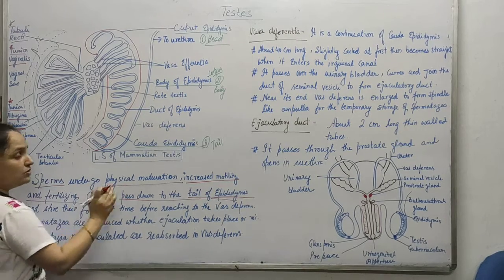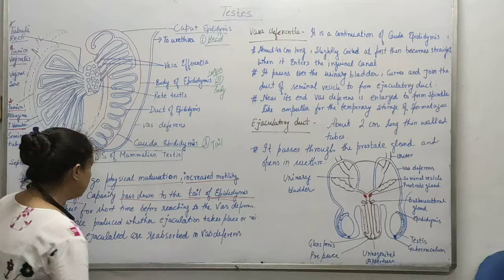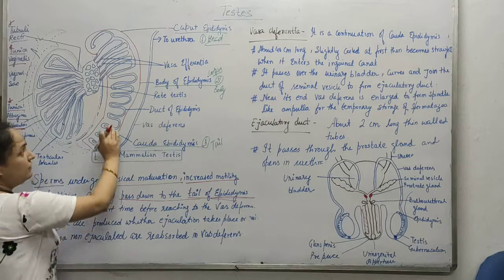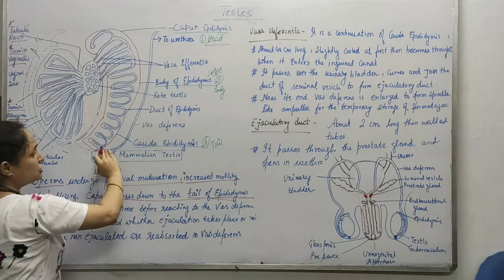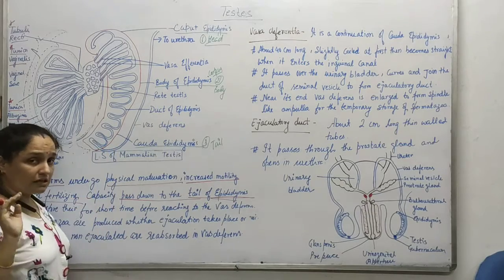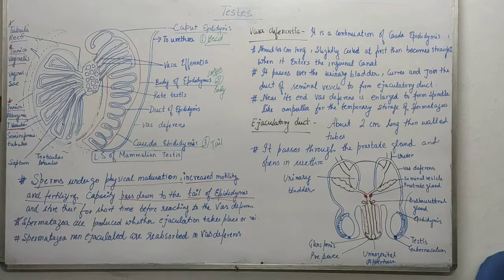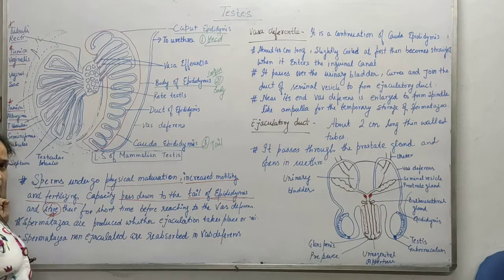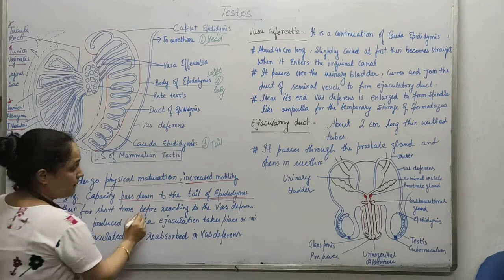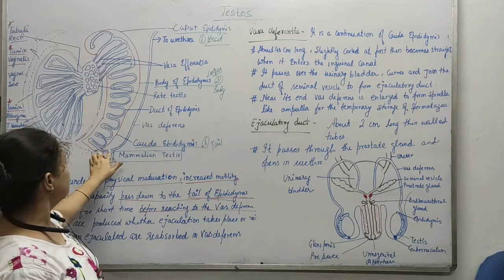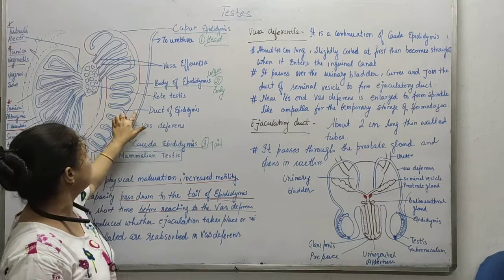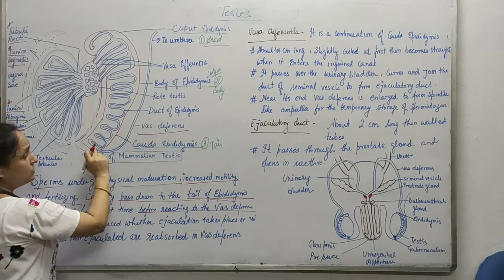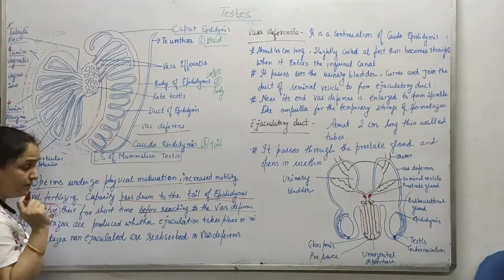Now sperms are going to get physically matured — they are going to get more motility and their fertilizing power or capacity is also going to be enhanced. Then they will be moving from this part and they will reach the cauda epididymis. The cauda is basically the tail part of the epididymis. There they are going to be stored for a very short duration before reaching the vas deferens, because from here they are going to reach this tube, the vas deferens. So before reaching the vas deferens they are stored in the caudal part of the epididymis.